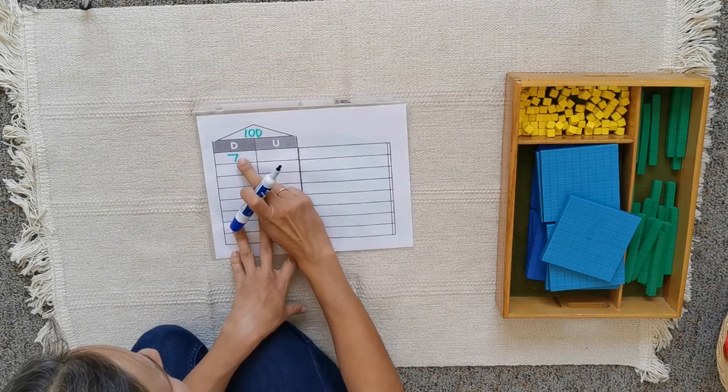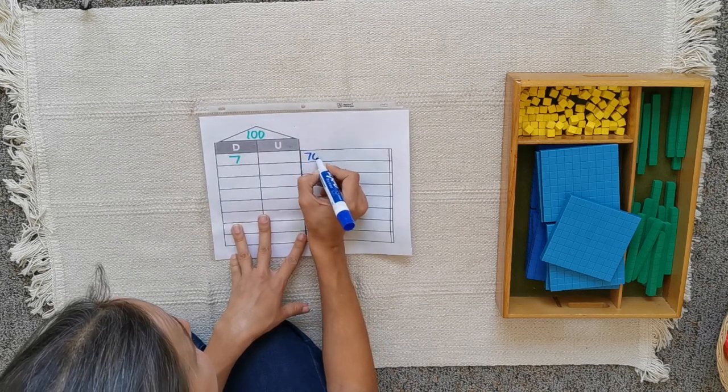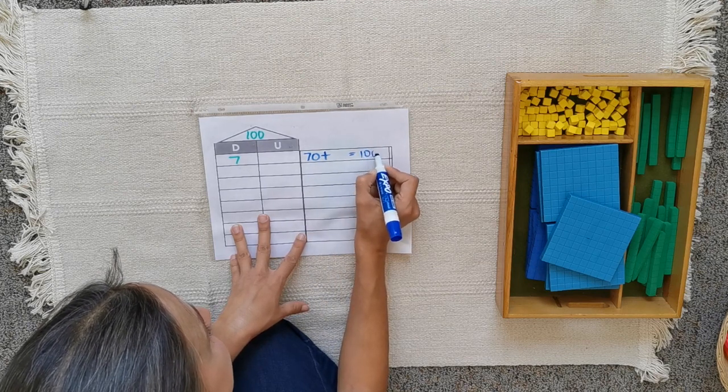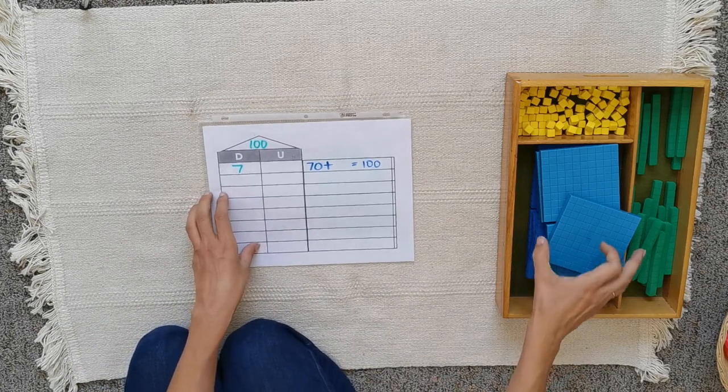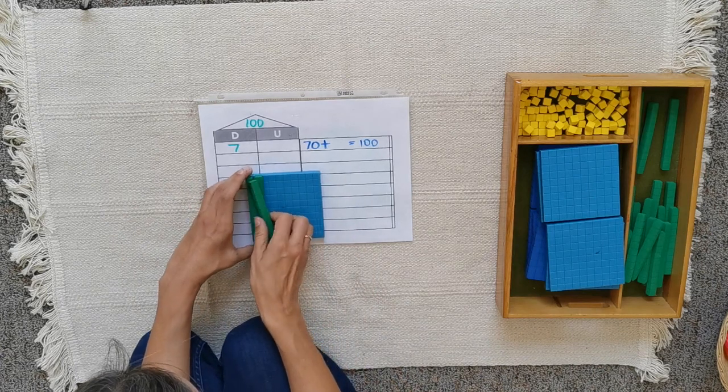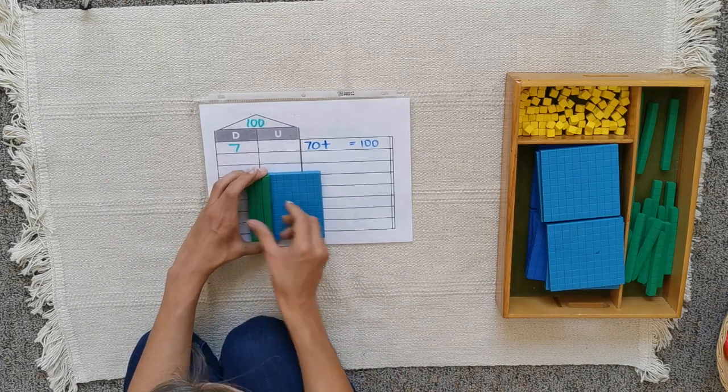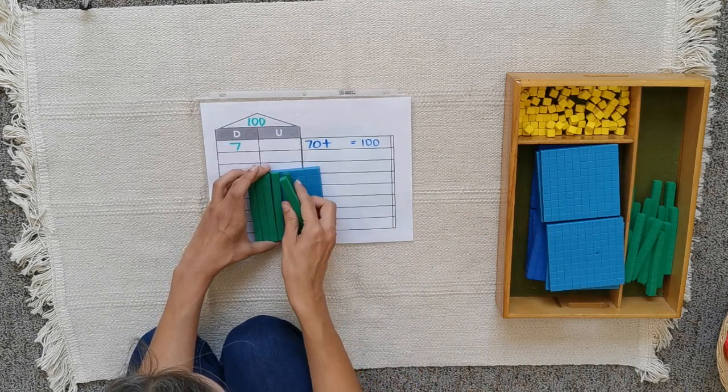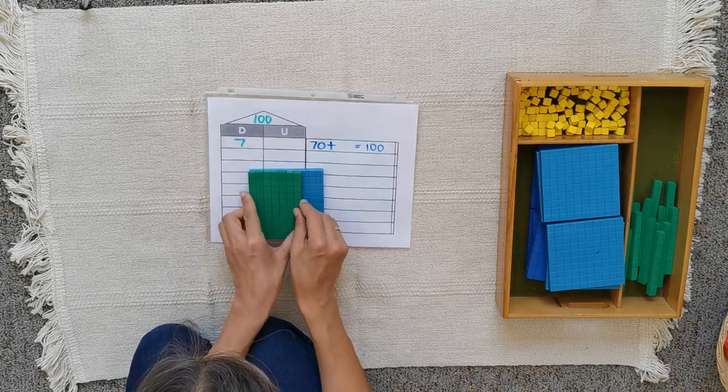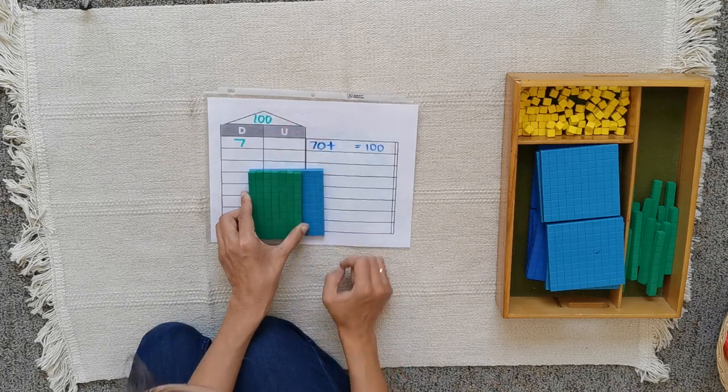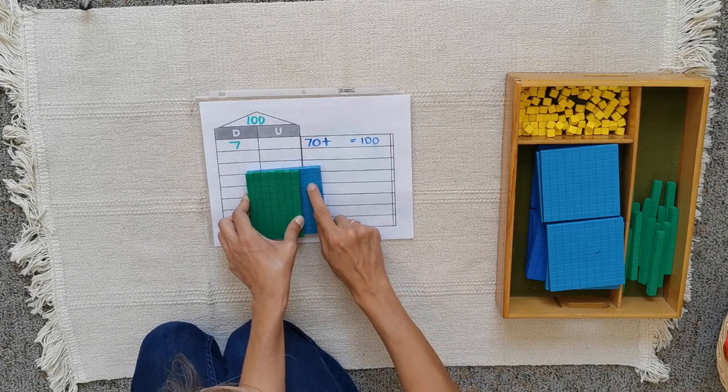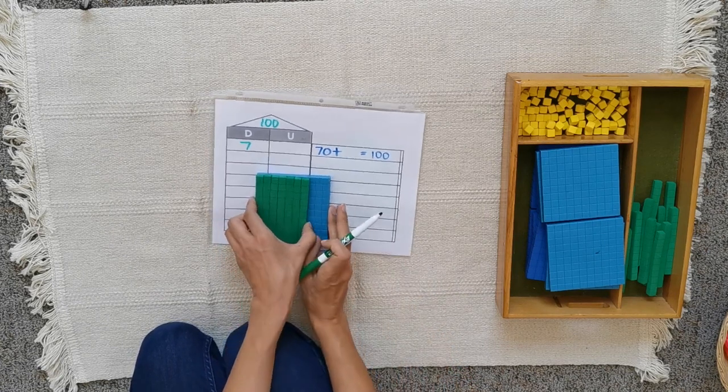But you have this room to help you. Seven tens actually is 70, and 70 plus something needs to make 100. Maybe you already know. Let's grab some blocks and see. Seven tens here, not three, no, seven. Seven. And here I can see the difference between 70 and 100, the number that I need to arrive. So how many more ones do I need to add? One, two, three, four, five, six, seven. Thirty more. Thirty more.